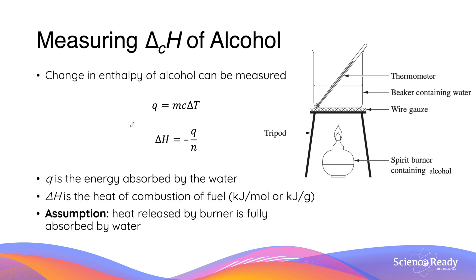The amount of heat energy produced by combusting alcohols can be measured by determining the temperature change of a volume of water absorbing the heat from the combustion reaction. The enthalpy change of a particular alcohol can be measured using a simple experimental setup: the alcohol is placed into a spirit burner and lit with a match. On top of the burner, we have a beaker containing water on a gauze mat and tripod stand, and we use a thermometer to measure the temperature increase of the water.